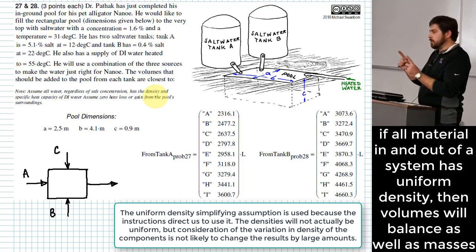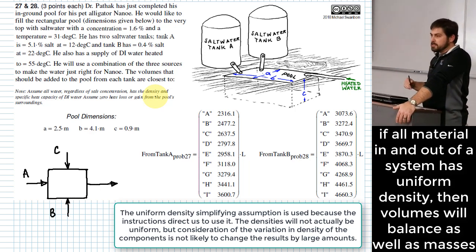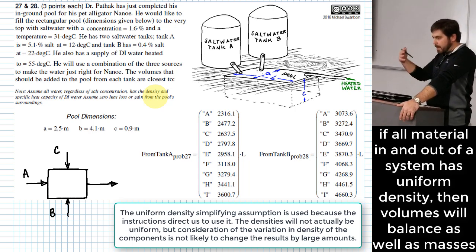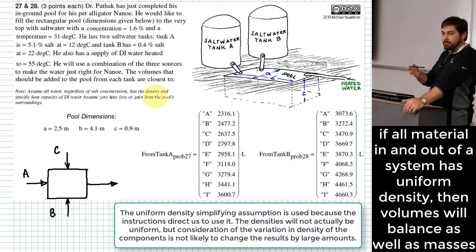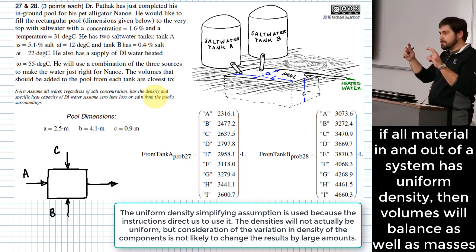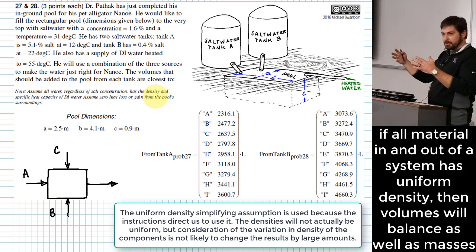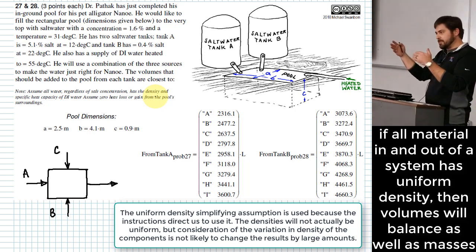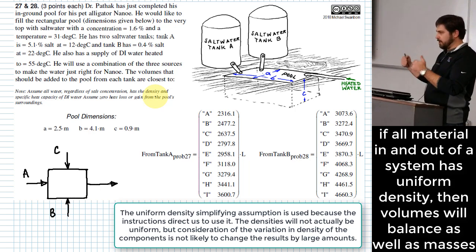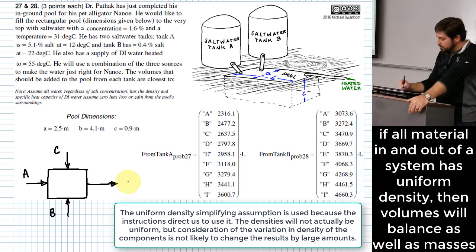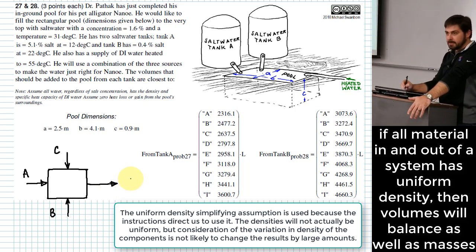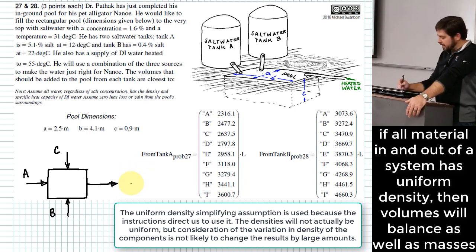Anytime you see that, and you look at all the different pieces that go into a system, and they all have the same density, one of the things you can do is instead of working on it as a mass balance problem, since they all have the same density, it basically will equate to a volume balance. It only works when you have constant densities for all of your pieces. But we do have that, so we can just do this in terms of volumes if we prefer. It makes it a little bit simpler and cleaner.